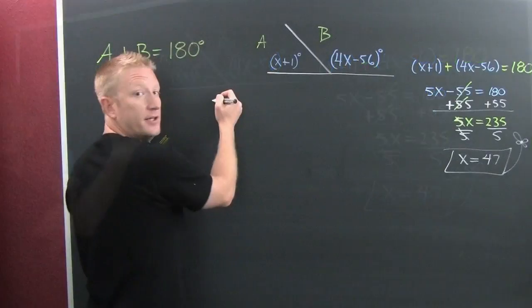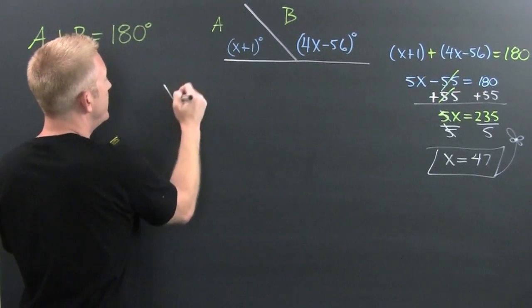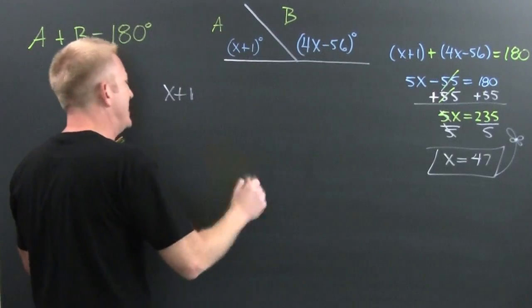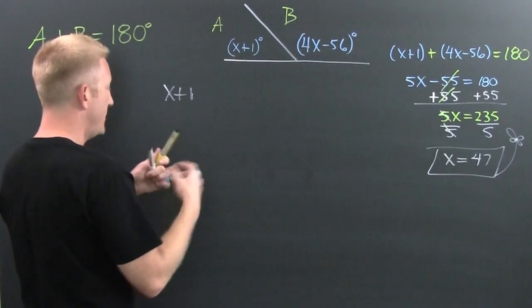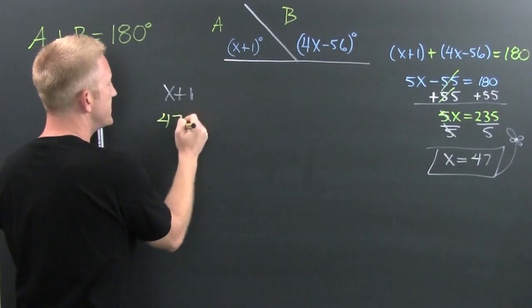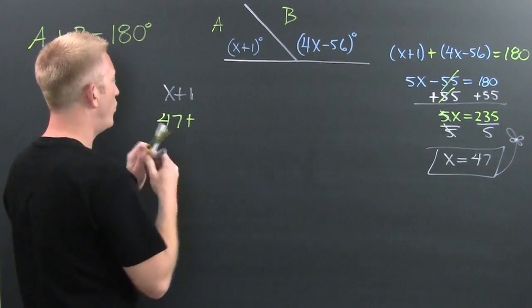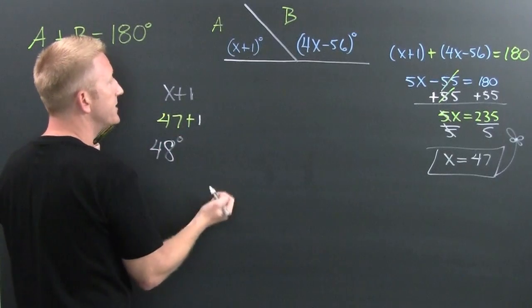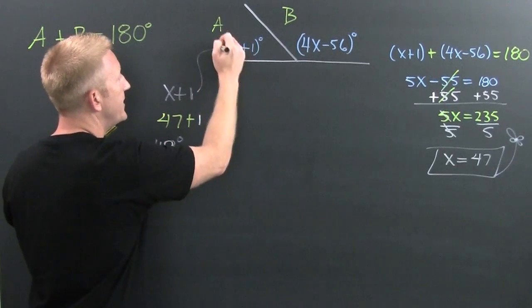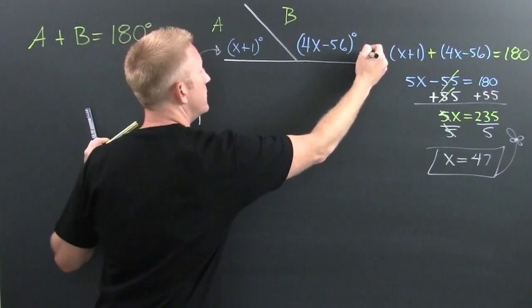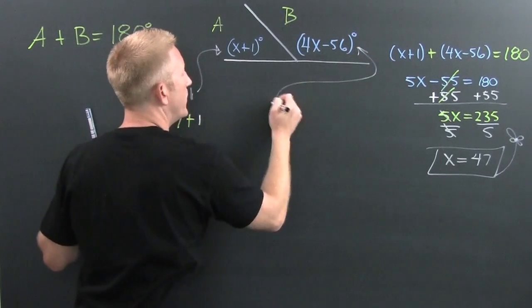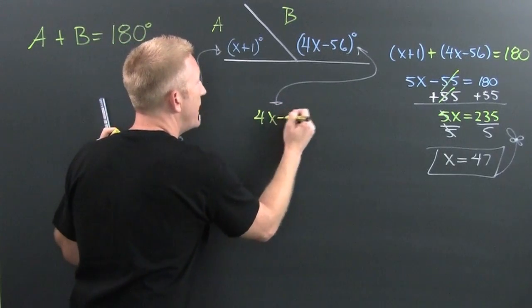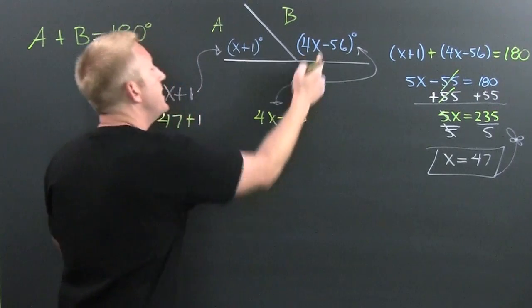But wait — we're not done. We want to find what those two angles actually are. That first angle is x plus 1. If x is 47, then we have 47 plus 1, and that angle is going to be 48 degrees.